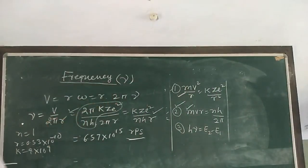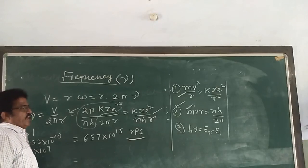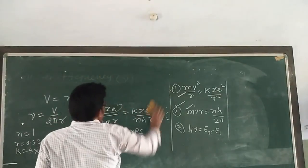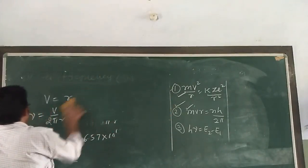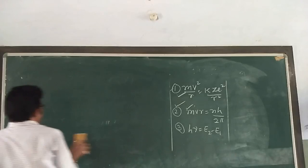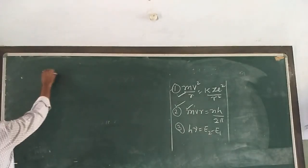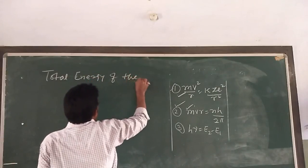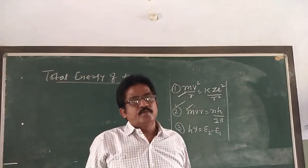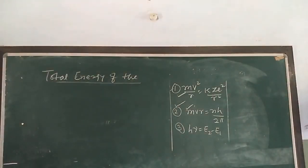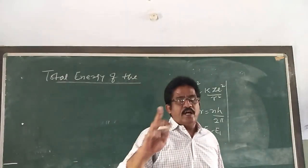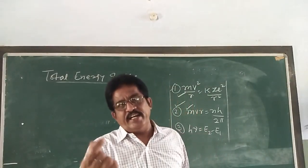Write that down. So we have covered radius, velocity, and frequency. Now the next topic is the total energy of the electrons in Bohr's stationary orbit. The total energy is of two types: kinetic energy and potential energy.